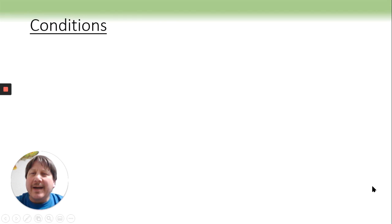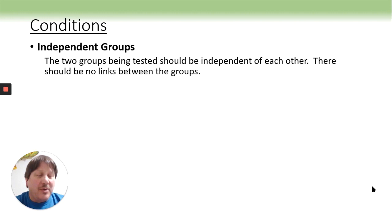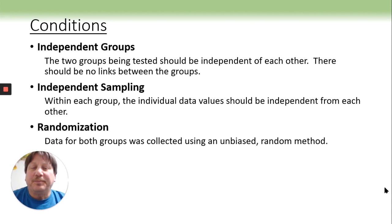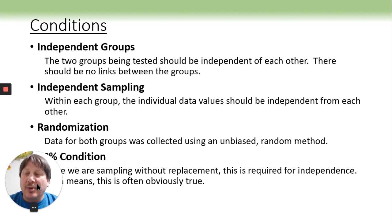So our conditions. The first one is probably the most important one, is that the two groups - you are doing two means. That means that it is a mean from two different groups that are completely independent of each other. And that is one that you need to remember to check. The other one, as always, within each group, the sampling is independent. And there's randomization for both data groups. And then the last one down there, can't see it, but it says the 10% condition where we are, because we're usually sampling without replacement, that is kind of required to obtain the independence.